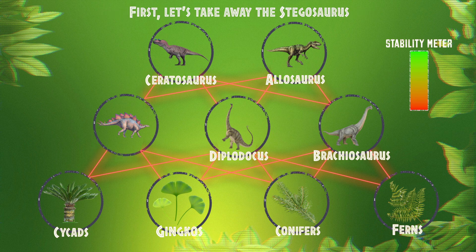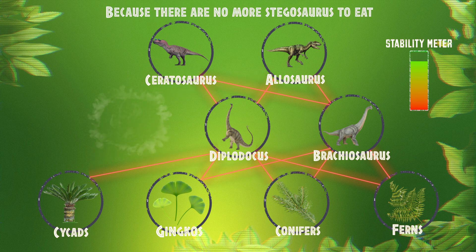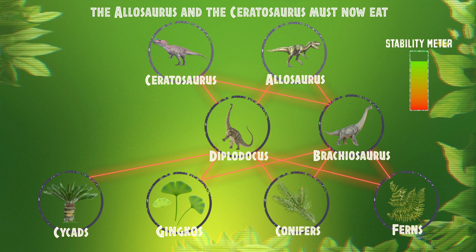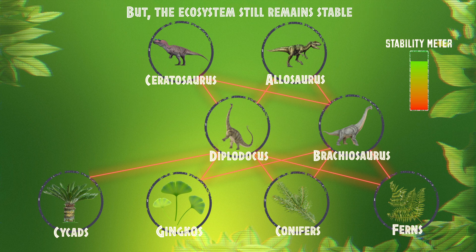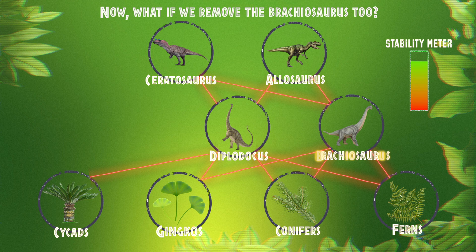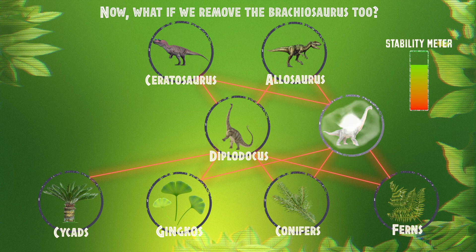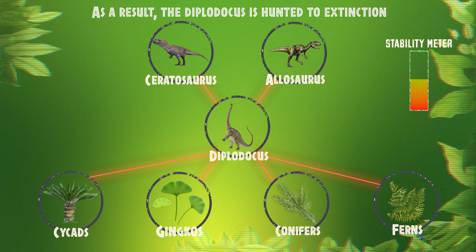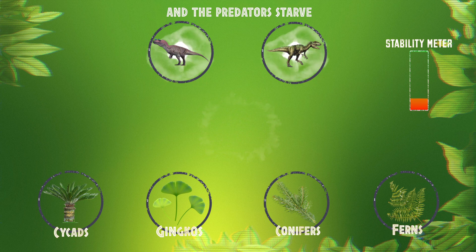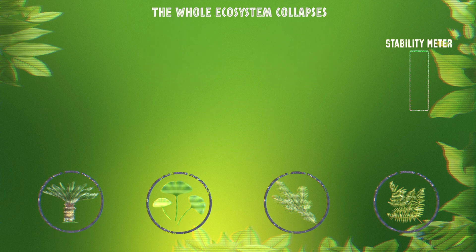We know that dinosaurs went extinct a long time ago, so let's see what happens if we remove a species. First, let's take away the Stegosaurus. Because there are no more Stegosaurus to eat, the Allosaurus and the Ceratosaurus must now eat more of the Diplodocus and the Brachiosaurus to survive — but the ecosystem still remains stable. Now, what if we remove the Brachiosaurus too? The Diplodocus becomes the only food source for the predators. As a result, the Diplodocus is hunted to extinction and the predators starve. The whole ecosystem collapses.